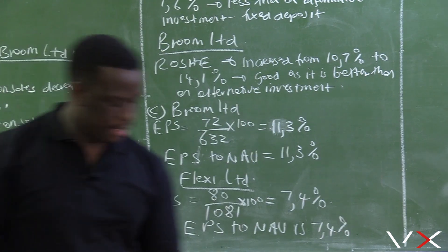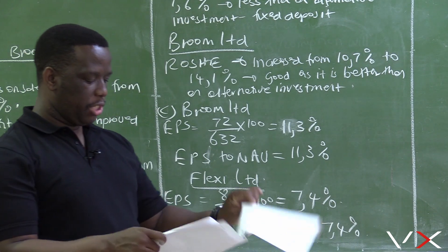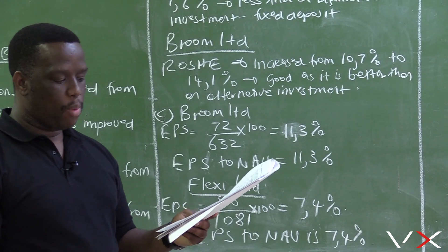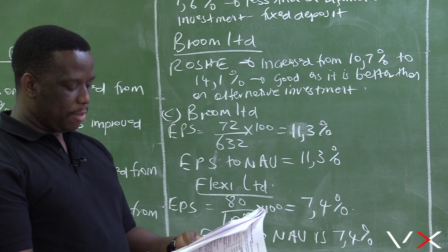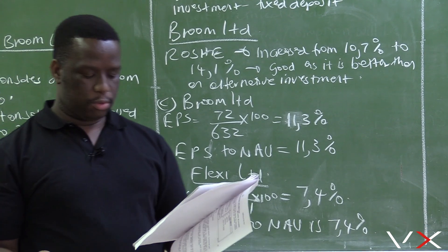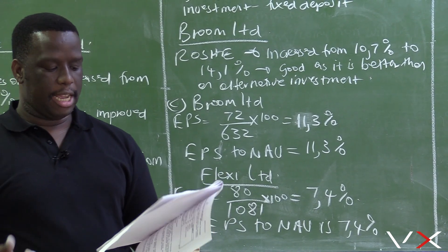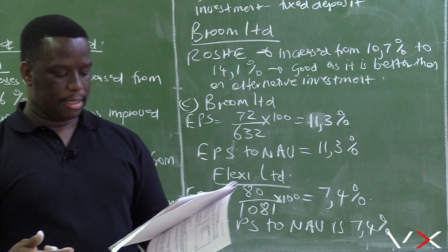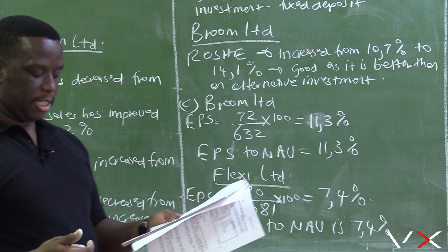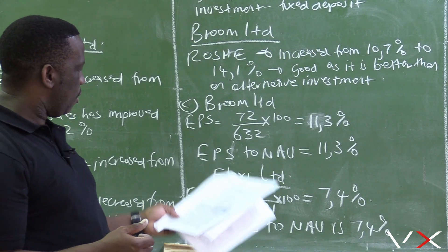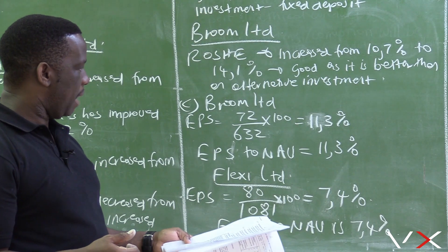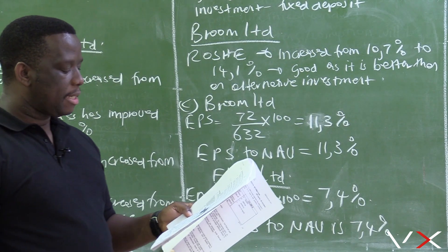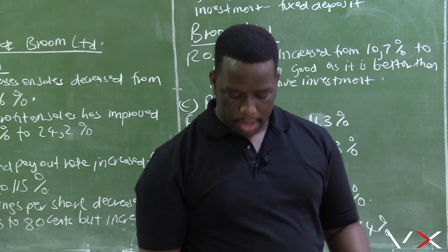So the question asks us to explain why we agree that earnings per share in Broom Ltd are better than in Flexi Ltd. If you look at the earnings per share of both companies, Broom Ltd has 72 cents and Flexi Ltd has 80 cents. However, when comparing to their NAV and market price, Broom Ltd is actually better, because the EPS to NAV for Broom Ltd is 11.3 percent versus 7.4 percent for Flexi Ltd.